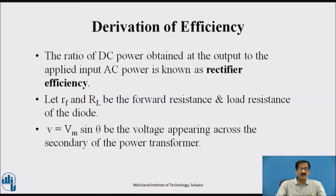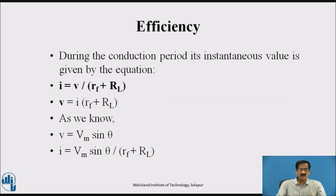Derivation of efficiency. The ratio of DC power obtained at the output to the applied input AC power is known as the rectifier efficiency. Let RF and RL be the forward resistance and load resistance of the diode respectively. V equals Vm sin theta, the voltage appearing across the secondary of the power transformer, where small V is the instantaneous value, capital Vm is the maximum value. During the conduction period, its instantaneous value is given by I equals V upon RF plus RL. As we know, V equals Vm sin theta, I equals Vm sin theta upon RF plus RL.